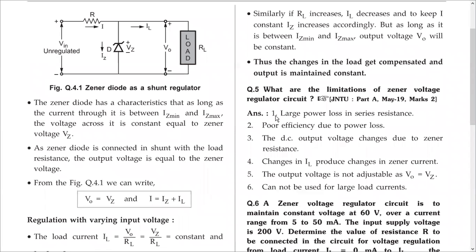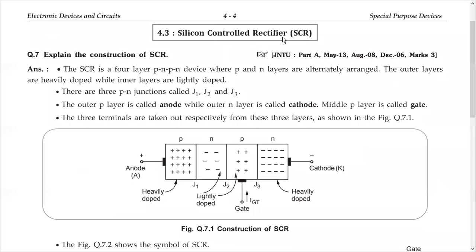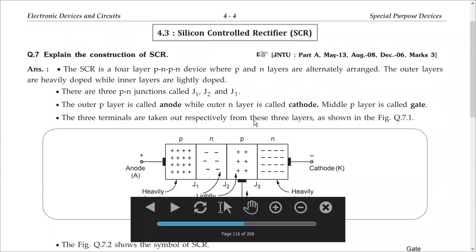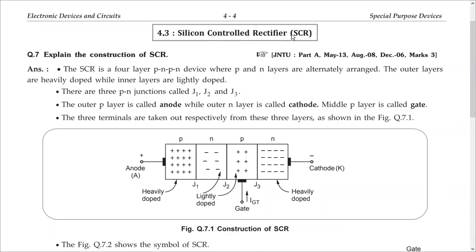Once again, quickly, I will recap whatever we have discussed. Silicon controlled rectifier — why is it called silicon controlled rectifier? Because this device provides rectification. Not only does it provide rectification, we can have control over how much cycle we want. Suppose a half wave rectifier will give you a half cycle. If you don't want the entire half cycle — suppose we want only 70% of that half cycle — you can use this device and get that. So controlled rectification is possible using this device, and it is made up of silicon. Hence, silicon controlled rectifier.